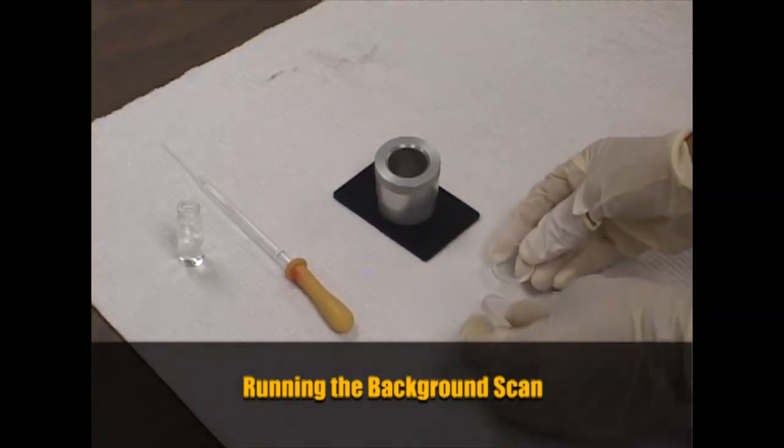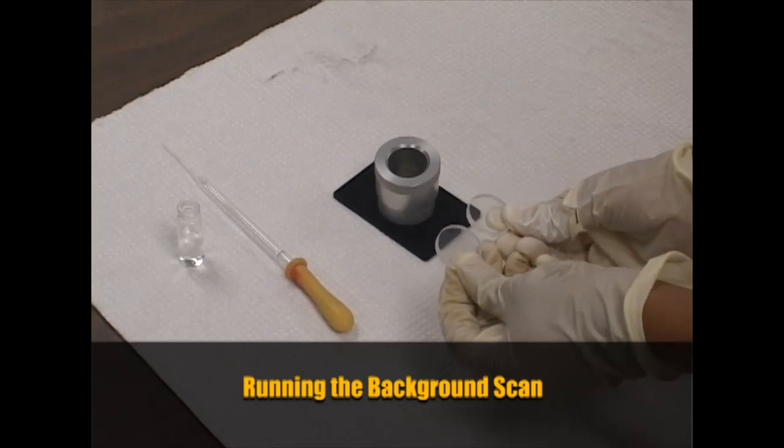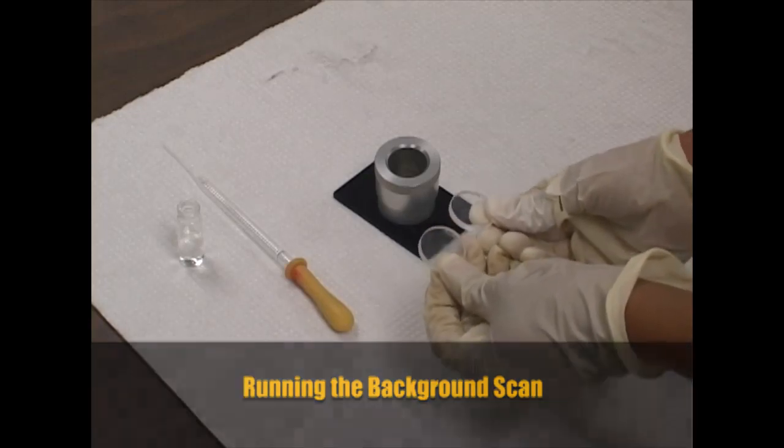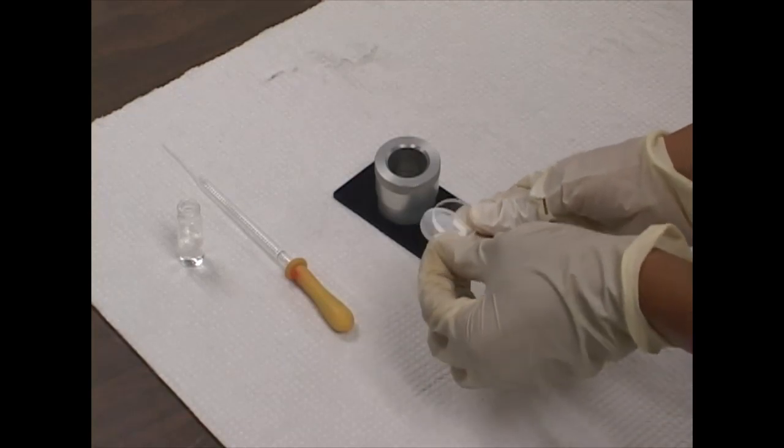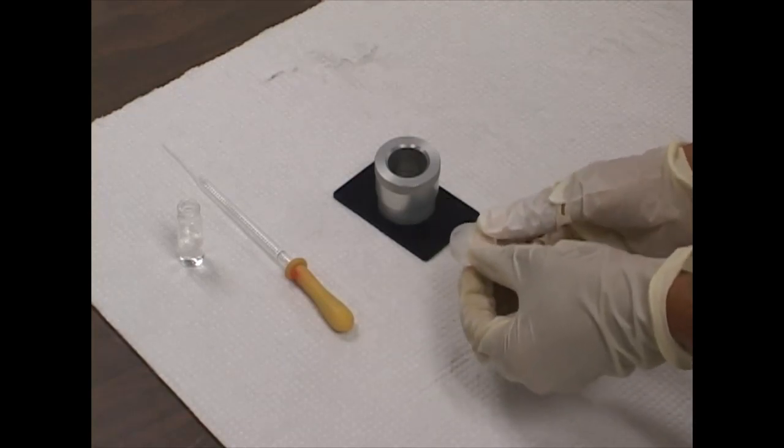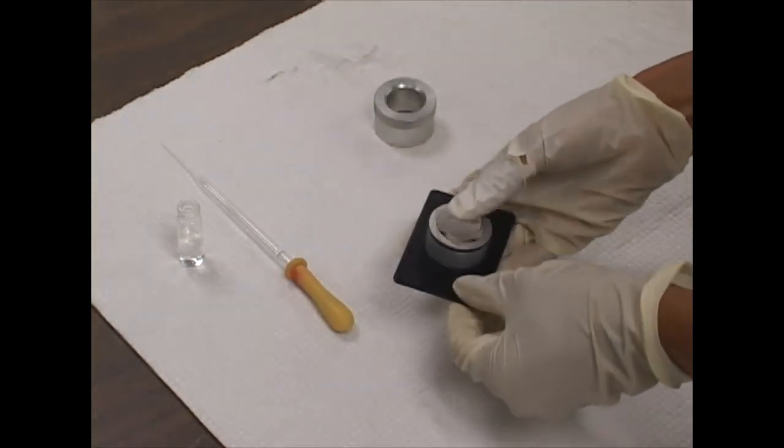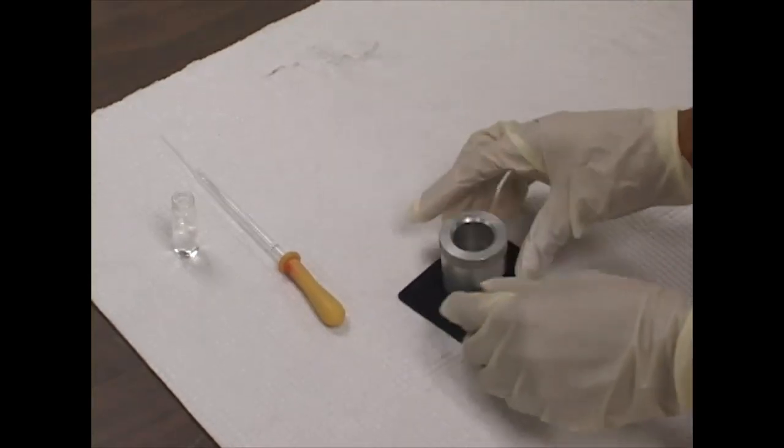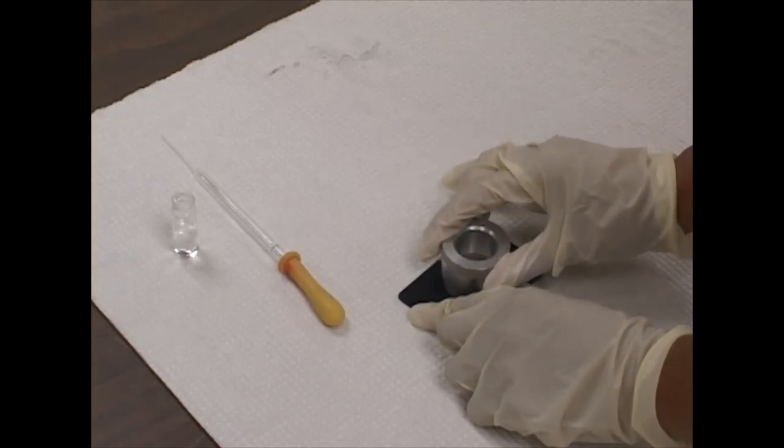These two transparent disks are salt plates used for FTIR, and they are made of sodium chloride. They are very fragile, so the first thing we're going to do is sandwich them together and place them on the salt plate holder. Carefully we'll put the top on, applying a little bit of pressure without cracking the plates.